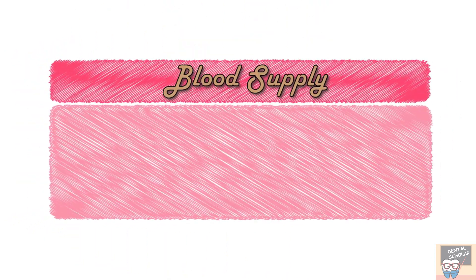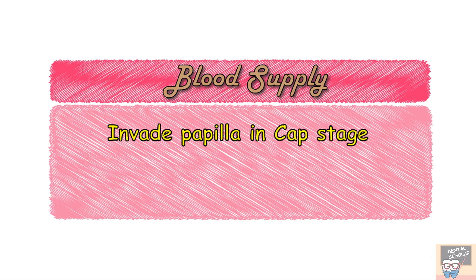Small blood vessels invade the dental papilla in the cap stage, and their number increases from then on until it reaches maximum in the bell stage. The enamel organ, however, remains avascular.